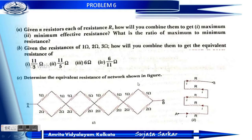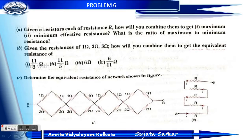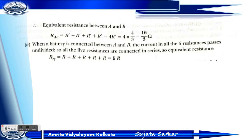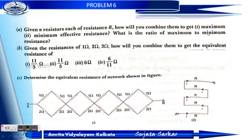For maximum resistance, resistors are connected in series giving N R. For minimum resistance, resistors are connected in parallel giving R by N. The ratio of maximum to minimum resistance is N R divided by R by N, which equals N squared.